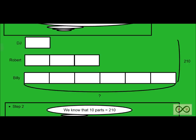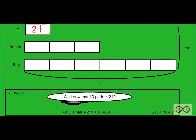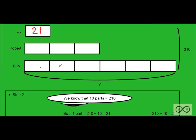So you now might be thinking in terms of multiples. Each part equals 21. So DJ had 21 model cars, Robert had three times as many, and Billy had twice as many as Robert. So now we can figure this out. Take a look at how many Billy has. One, two, three, four, five, six equal parts.